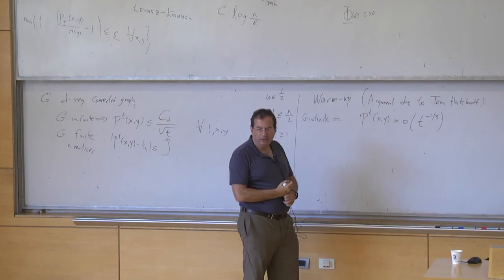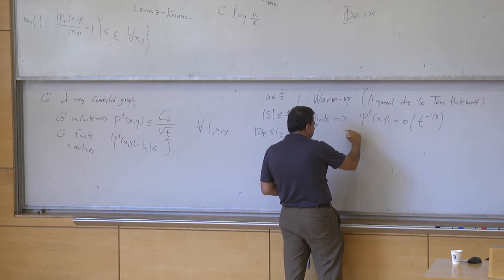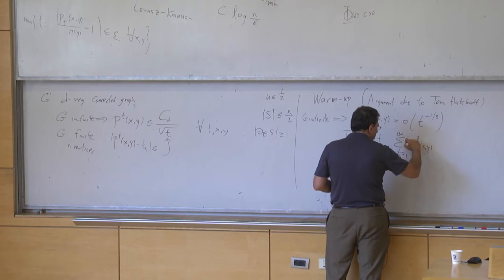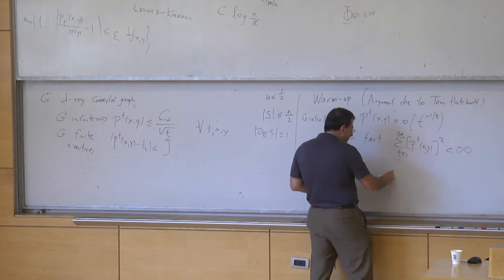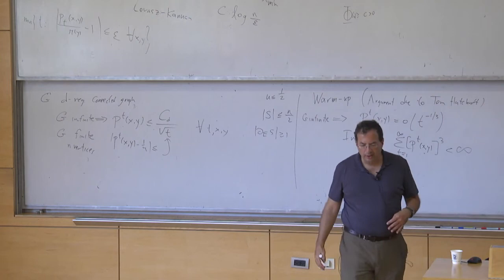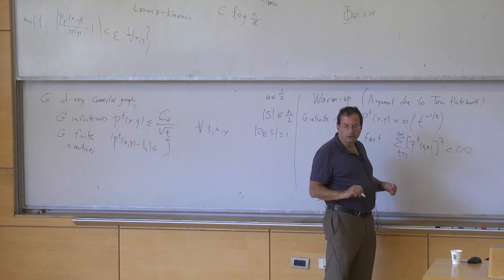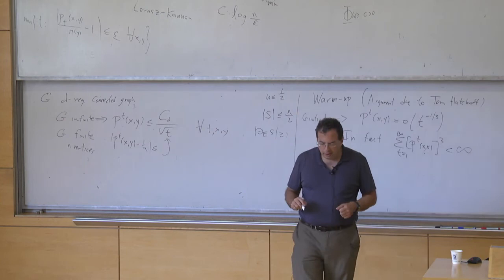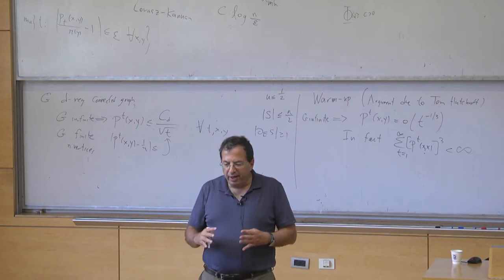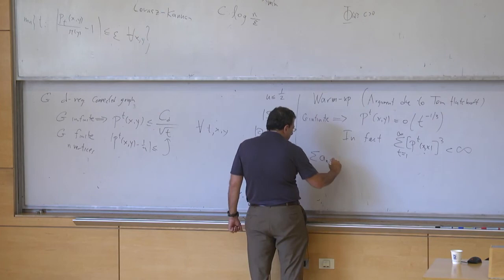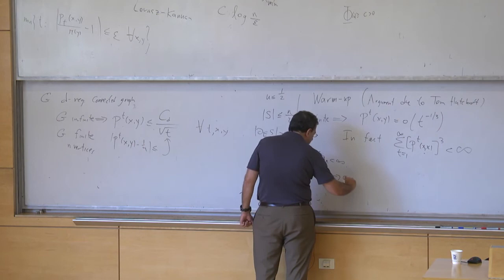Here's a very cute simple argument. In fact, here's something stronger: the sum over t from one to infinity of p_t(x,y)^3 is finite. Now p_t(x,x) is a decreasing sequence along even times, and it suffices to control the diagonal. If you have any sequence a_n that is summable and decreasing, then a_n must be little-o of 1/n — that's a calculus exercise. Apply that for even times and you get the little-o bound.